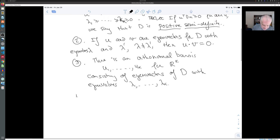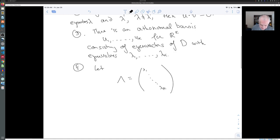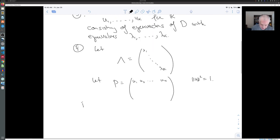And finally, this is maybe the thing which is often called the spectral theorem: suppose we make a diagonal matrix out of the eigenvalues of D and we let P be a matrix whose columns are the eigenvectors with norms equal to one. Then D is equal to P lambda P transpose.